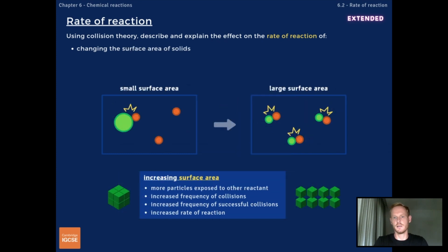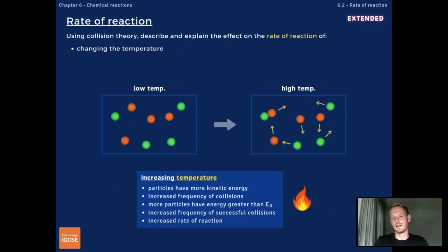Increasing the surface area of a solid, for example using powder instead of granules, exposes more particles to the other reactant. This increases the frequency of collisions and successful collisions between particles, leading to an increased rate of reaction. Increasing temperature provides particles with more kinetic energy, causing them to move faster and collide more frequently. In addition, a greater proportion of reactant particles have energy equal to or greater than the activation energy. Both of these factors increase the frequency of successful collisions, leading to an increased rate of reaction.